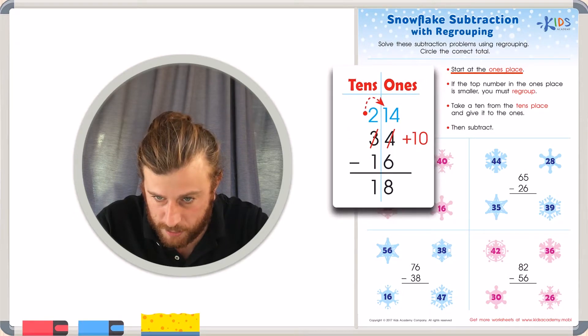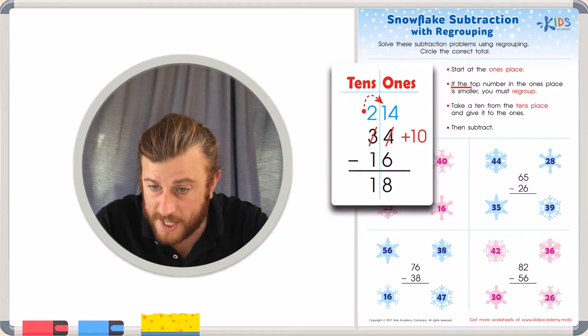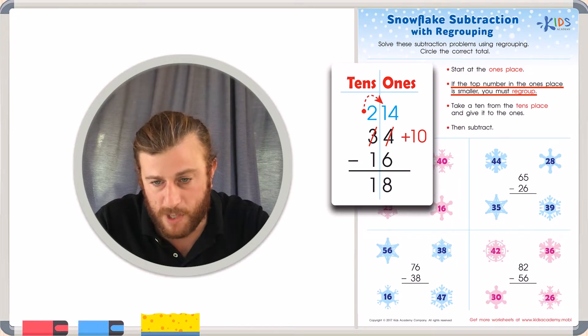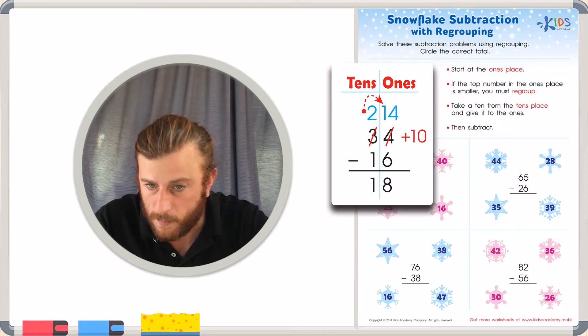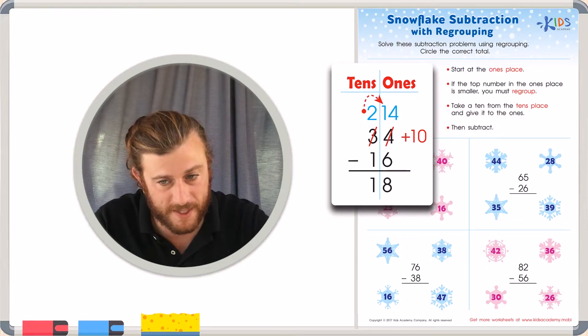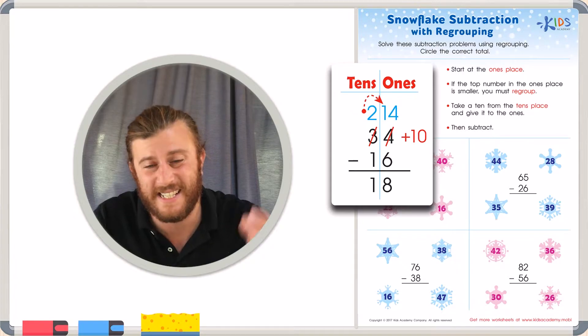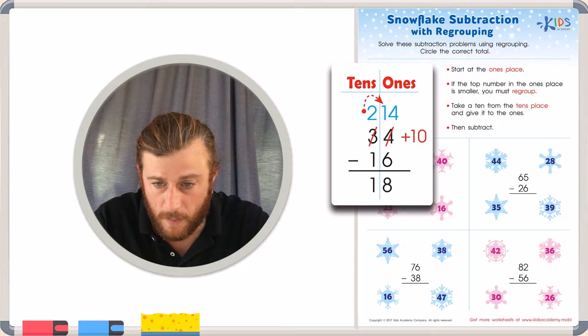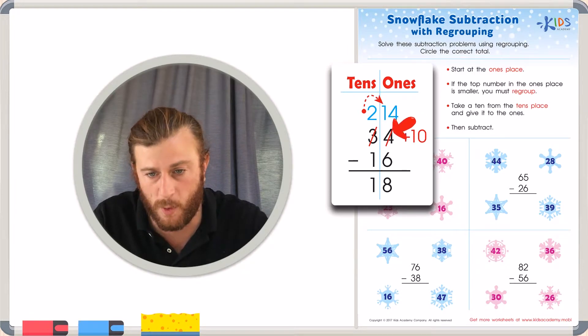Start at the ones place. The ones place has been nicely labeled for us. If the top number in the ones place is smaller, you must regroup. So in this problem, 4 is smaller than 6, so we must regroup. To regroup, we'll take a 10 from the tens place. So that means we have to take our 30 or 3 and change it into a 20 or 2 and take that 10 and give it to the ones place. This 10 that we've taken plus 10 really turns 4 into 14.